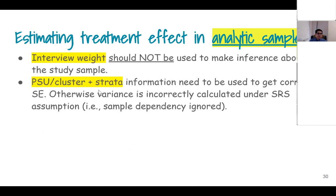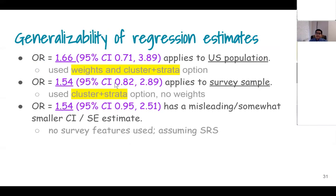If you are making inference about the study sample, interview weights should not be used. If you are making inference about the population, interview weights should be used. The PSU and strata information are helpful for calculating the standard error regardless of whether you are doing it for the sample or population. Alternatively, bootstrap weights can also work to calculate correct standard errors.